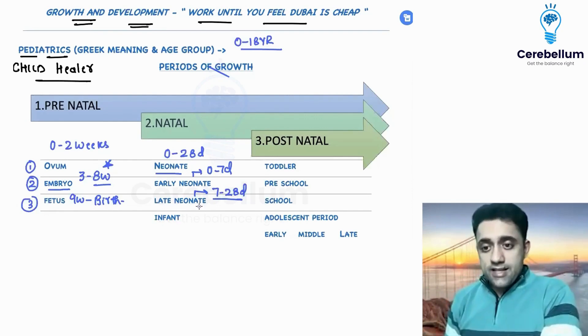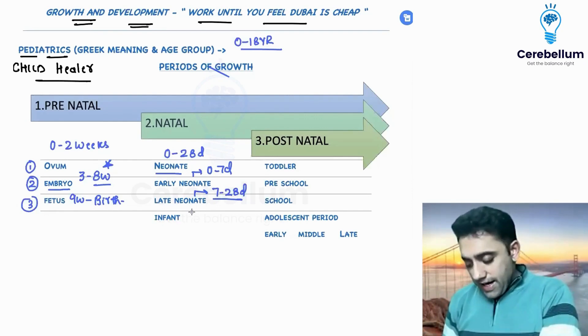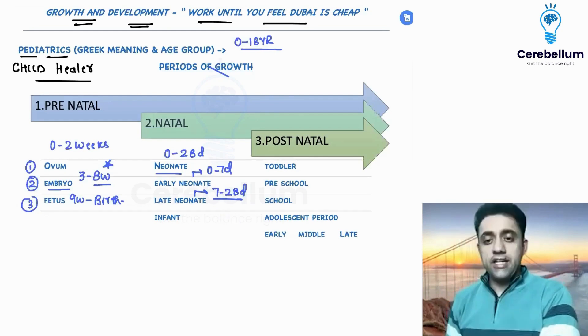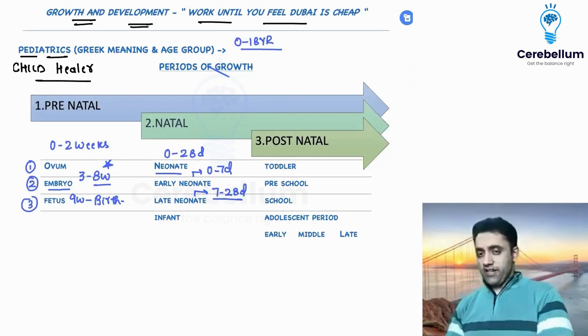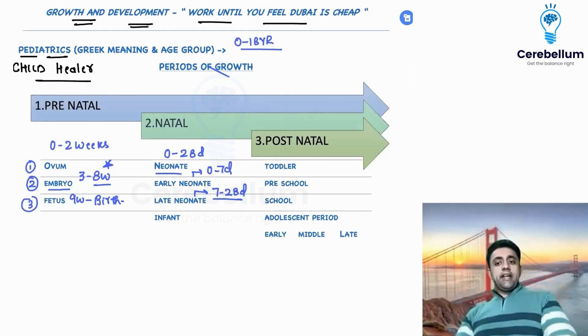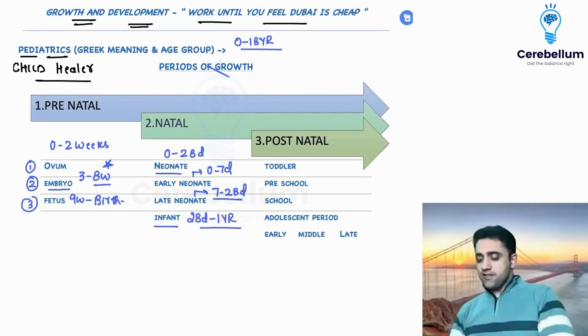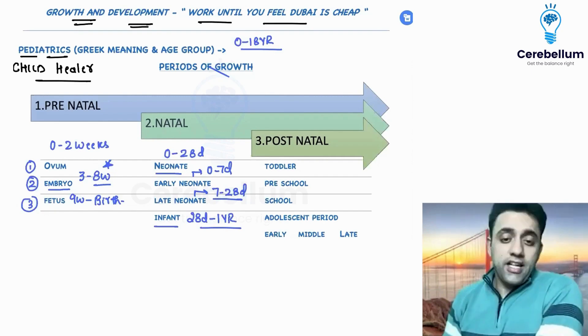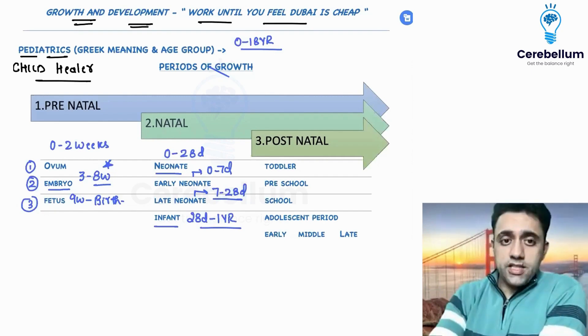What is an infant? 28 days of life till one year is known as an infant.